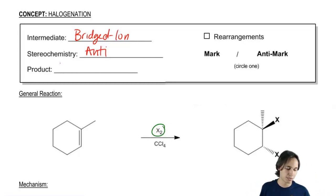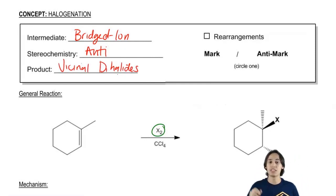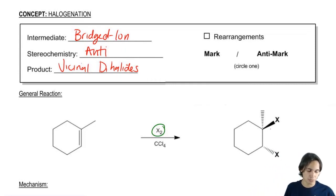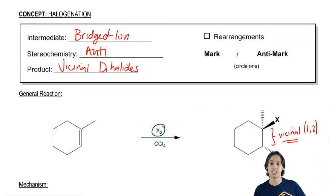And then my product is going to be, like I said, vicinal dihalides. Now just to remind you guys, the word vicinal means that there's two things next to each other. So this relationship here would be vicinal because they are right next to each other. Vicinal is also the same as saying one-two. Basically you have something on the one position and something at the two position, and that would be vicinal.